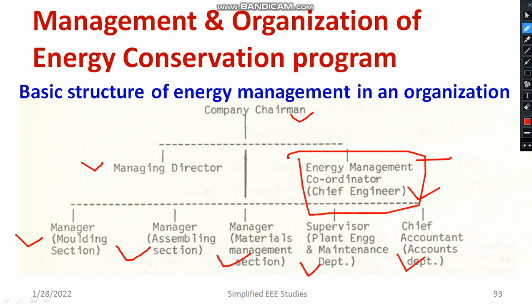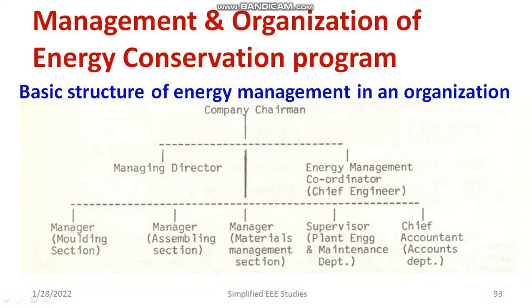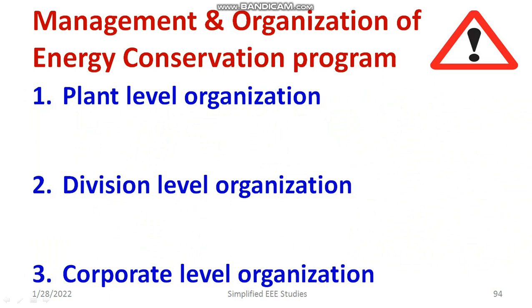This is one typical example. Likewise, there are different hierarchies. If you look at this flow chart, you will understand that the chief engineer or energy management coordinator has a crucial role in following up all the types of processes involved in the particular organization. This is the basic structure of the energy management program, but depending on the area or nature of the organization, there are different types of energy management programs.